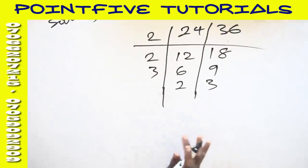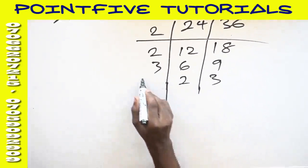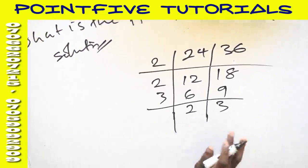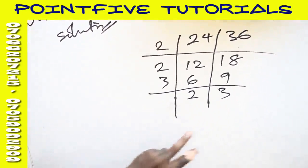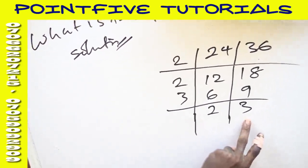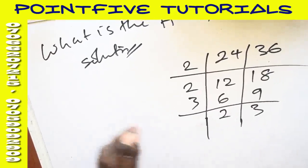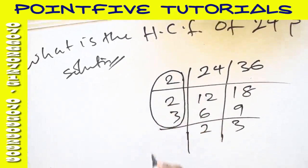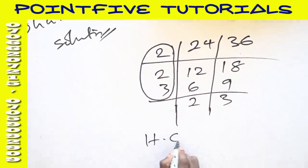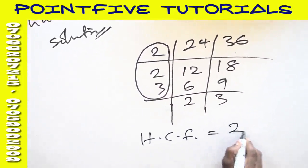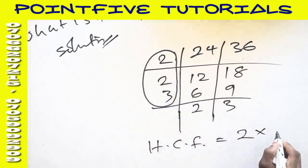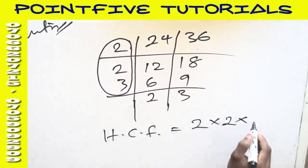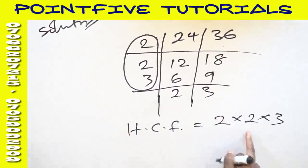You look for a number that must divide these 2 and 3. There is no other number. 2 can divide 2, but cannot divide 3. So we stop. 3 can divide 3, but cannot divide 2. So we stop. So we take this guy. Our HCF would then be 2 times 2 times 3. 2 times 2 is 4, times 3 is 12.